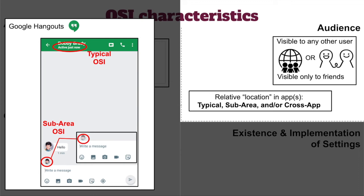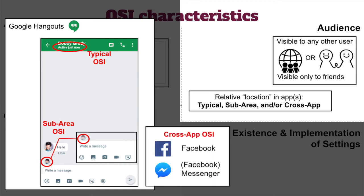Sub-area OSIs are not always limited to a conversation view — for example, in Slack all OSIs are sub-area within a particular workspace. A third type of OSI is the cross-app OSI. For example, users on Facebook can see people who are online in Facebook Messenger, even though that's technically a different app.